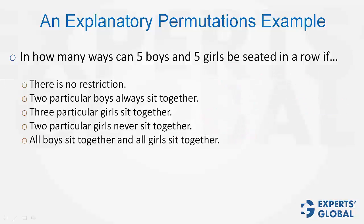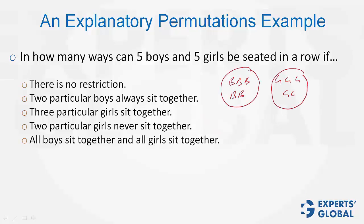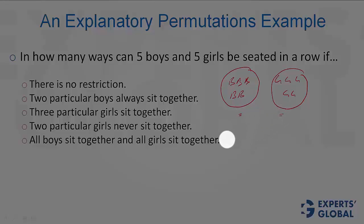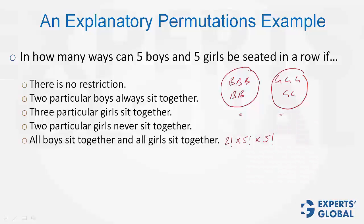Case 5: all boys sit together and all girls sit together. Boys become 1 entity and girls become 1 entity — in all, 2 entities. The 2 entities can be shuffled in 2 factorial ways. Each entity has 5 elements and can be shuffled in 5 factorial ways each. That's our answer.